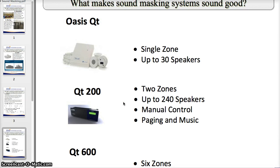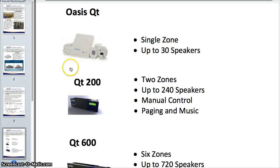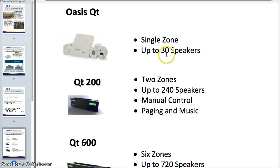Sound masking has a few different approaches and you'll need to ask Haverford Systems which system fits your budget and space. Briefly, there are single zone emitters and single zone modules that can go up to 30 emitters. Each emitter covers about a 10 by 10 space, so 30 emitters gives you 300 square feet of coverage.